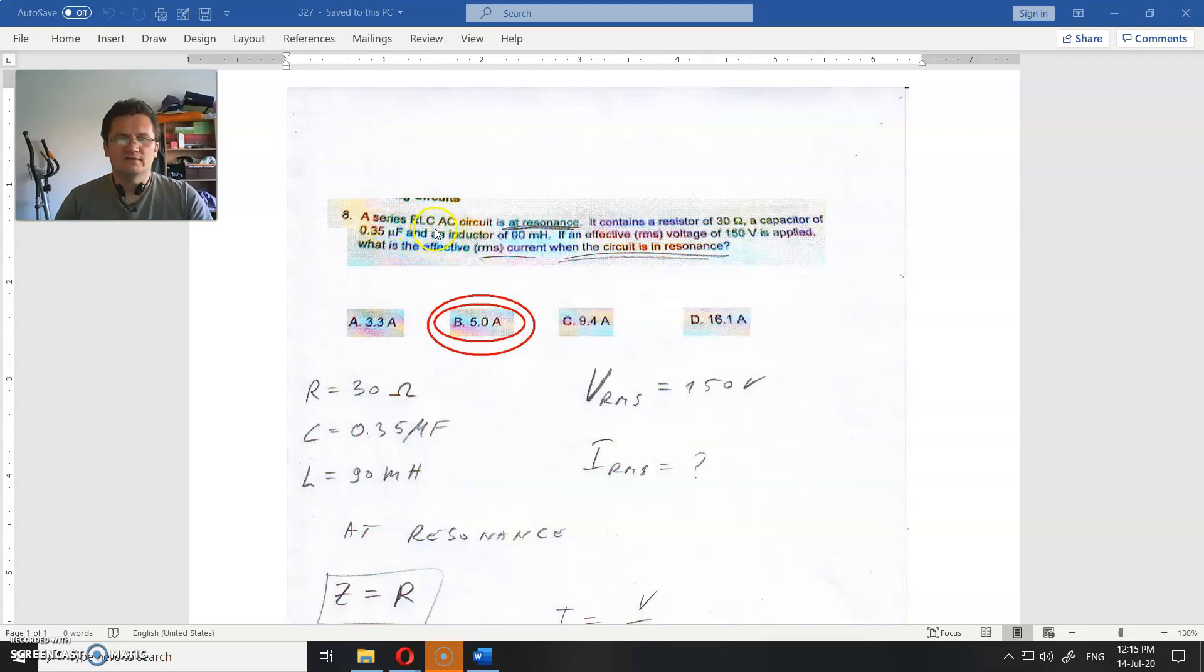A series RLC AC circuit is at resonance. It contains a resistor of 30 ohms, a capacitor of 0.35 microfarads, and an inductor of 90 mH. If an effective root mean square voltage of 150 volts is applied, what is the effective root mean square current when the circuit is in resonance?